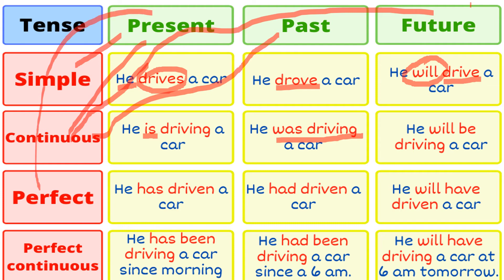Next is present perfect: 'He has driven a car.' Future perfect: 'He will have driven a car.' For present perfect continuous: 'He has been driving' — 'been' is added throughout. With singular we use 'has,' with plural 'have.' So: 'He has been driving a car,' 'He had been driving a car,' 'He will have been driving a car at 6 a.m. tomorrow' — meaning he will still be driving at that point.